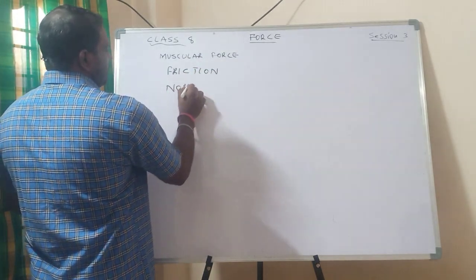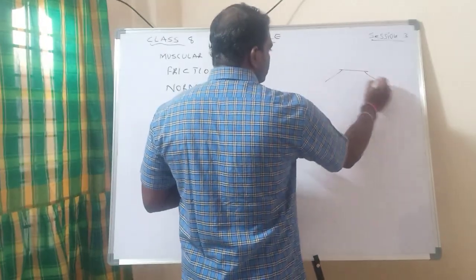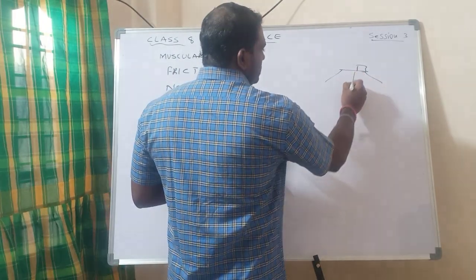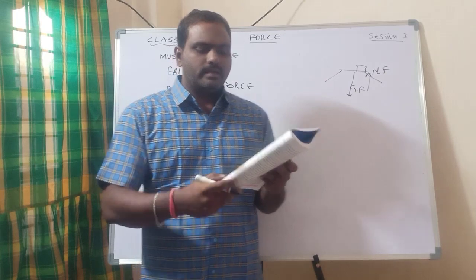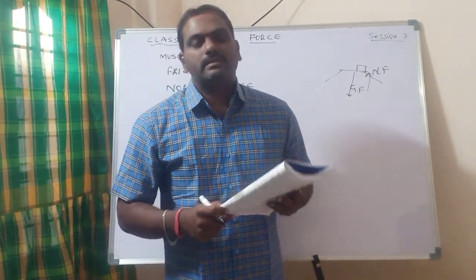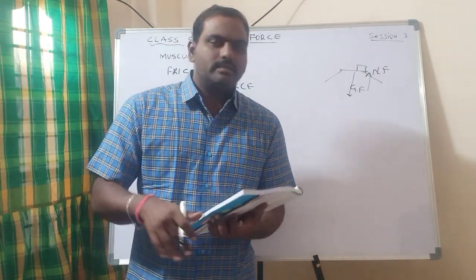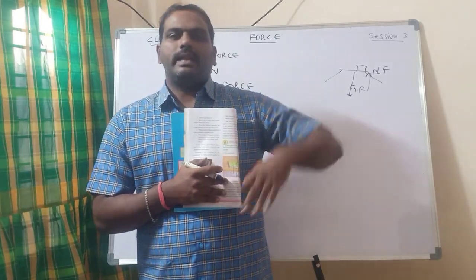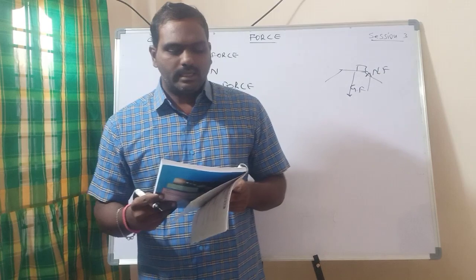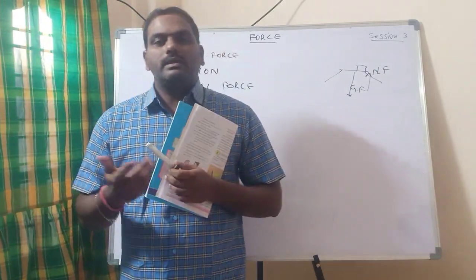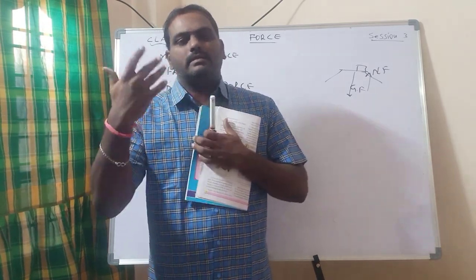The normal force acts in the perpendicular direction to the gravitational force. A table is there and the book is kept on it — gravitational force pulls it down and the normal force pushes it up. As shown in the figure, one arrow is toward Fg (gravitational force) and one arrow is upward toward Fn (normal force). The downward gravitational force is balanced by the upward normal force.